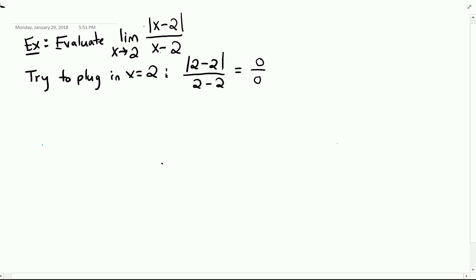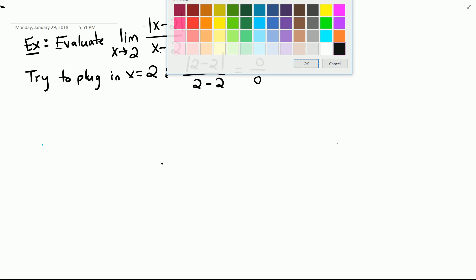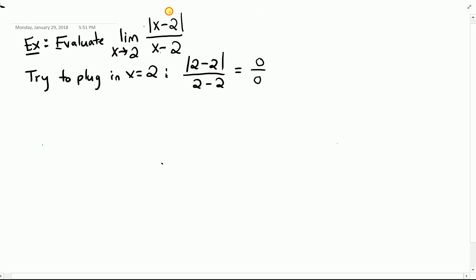When we have a limit and we try to plug in the number and we end up with 0 over 0, that means we have to try to simplify this expression first and then plug in. But the issue here is this is hard to simplify, and what makes it hard to simplify is this absolute value term.